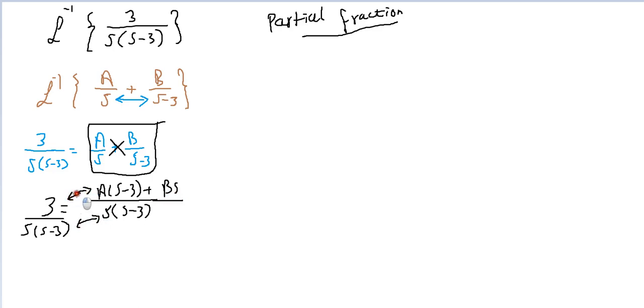So this is the theory of partial fraction. So this means 3 equal to A times s minus 3 plus B times s. That's it. You need to get the value of A and B.